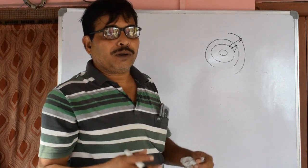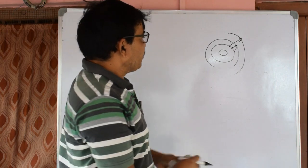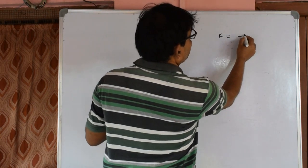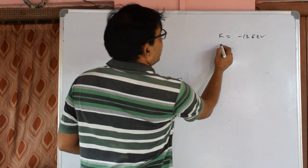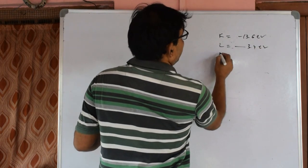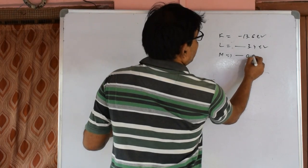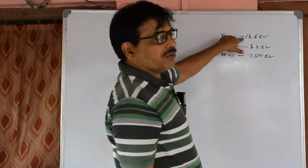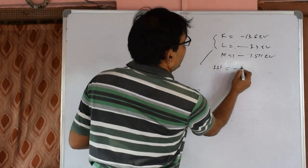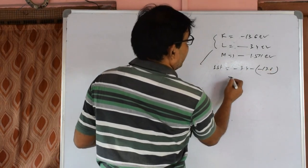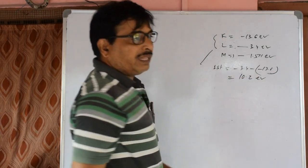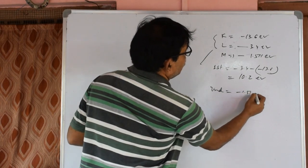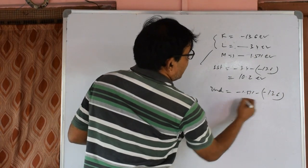Now, let's see: the hydrogen Bohr model gives the ground state energy as the first principal energy level. We understand that the first energy level is minus 13.6 eV — that's 13.6 electron volts. The power of the second energy level is minus 3.4 eV, and the third level is minus 1.51 eV.